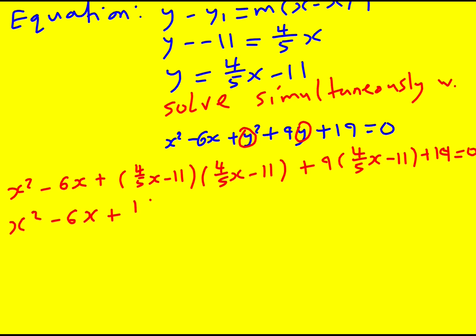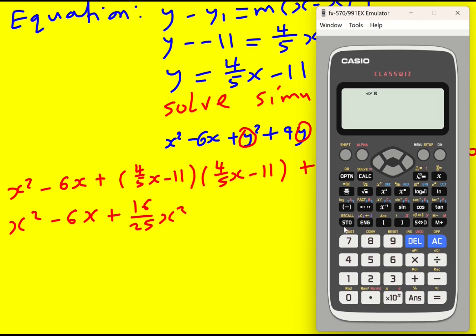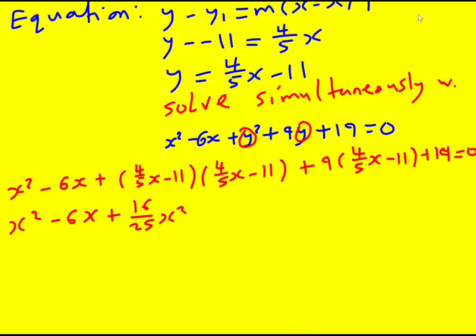So I'm going to replace all my y's by this 4 fifths x minus 11. Then expand this bracket out, so 16 over 25 x squared, and I've got these cross terms—I've got 4 fifths times minus 11.